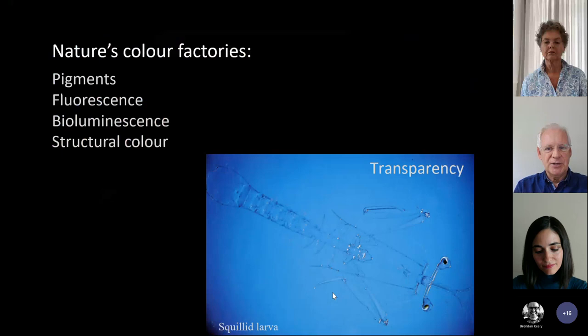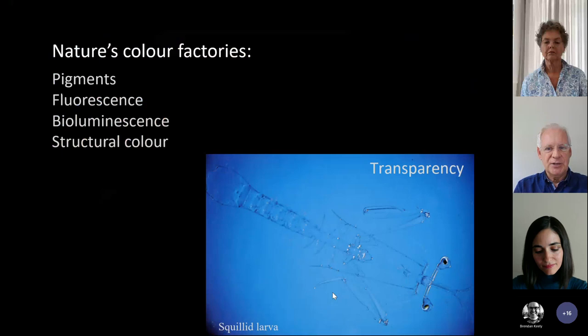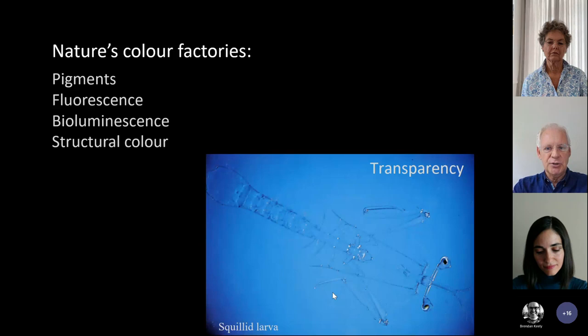In terms of nature's colours, I like to think of them as colour factories. The leaves of plants or the feathers of birds all contain microscopic factories of different types — mainly four main types: pigments, fluorescence, bioluminescence, and structural colour. And if you have none of those, you're left with transparency, as you can see in this planktonic animal.